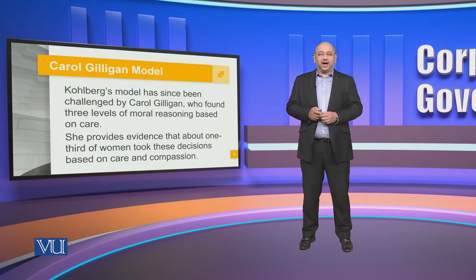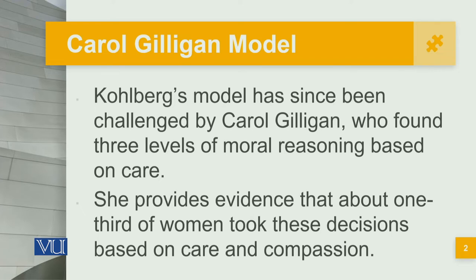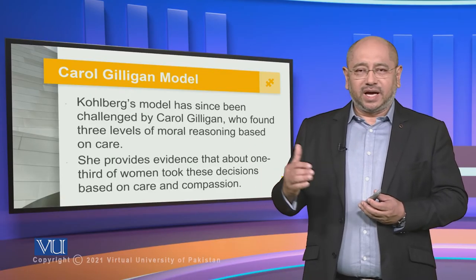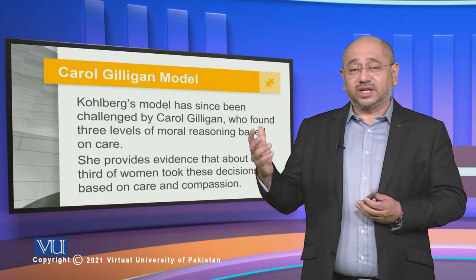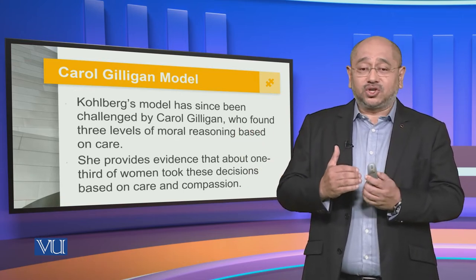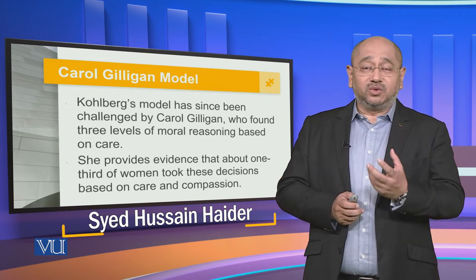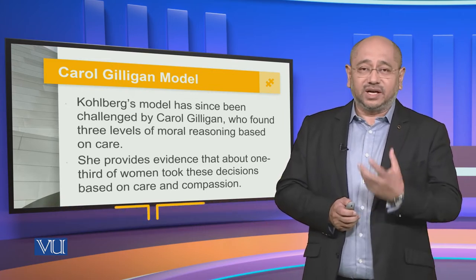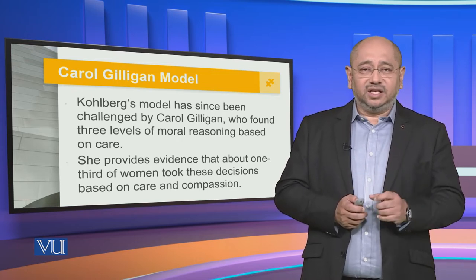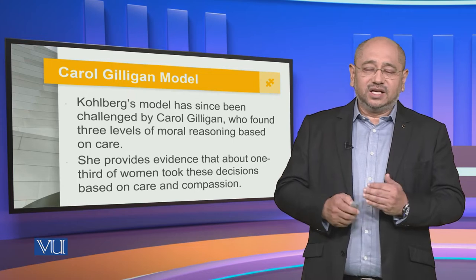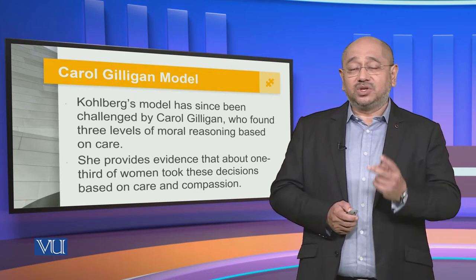Gilligan challenged existing models and proposed three levels of moral reasoning based on care. She provides evidence that about one third of women took decisions based upon care and compassion. The Gilligan model is more focused on the female gender and looks at decision-making in the context of care and compassion, emphasizing empathy and sympathy while shedding apathy and antipathy. This model revolves around the two C's: care and compassion.